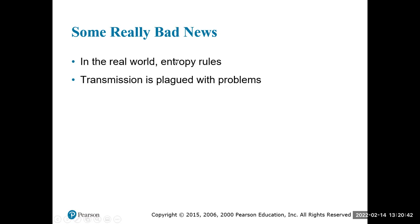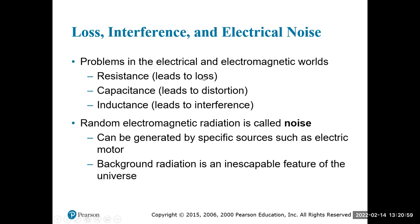Wired transmissions are particularly susceptible to electromagnetic interference. A good example is fluorescent lights. In the overhead space above an office, there are often copper network Ethernet cables. If a work crew simply runs the wire in the ceiling near large power lines or a fluorescent light, the electrical noise from that fluorescent light will squelch the ones and zeros traveling on that wire, leading to distortion, interference, and loss.